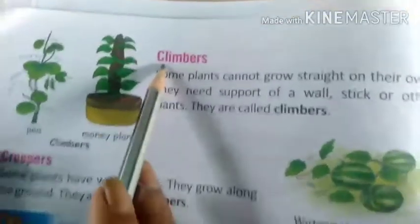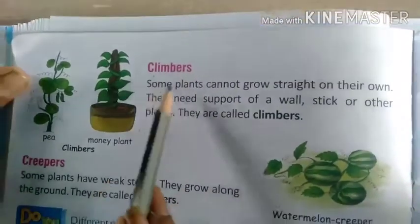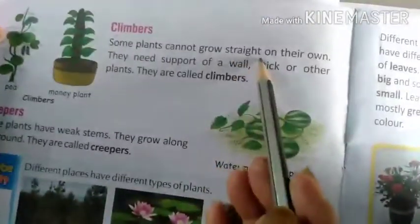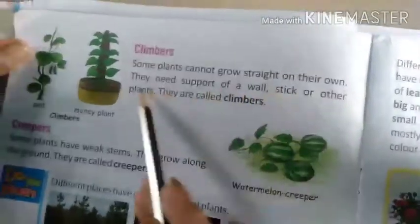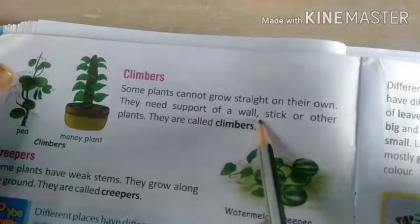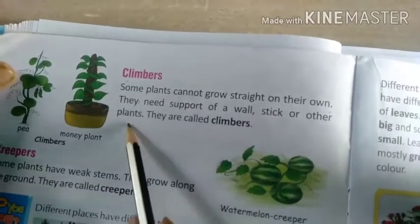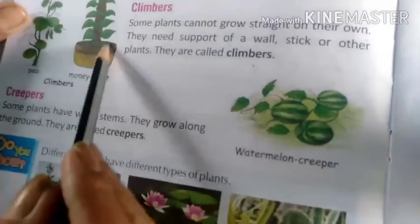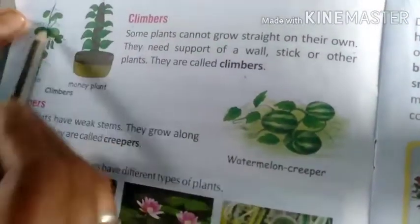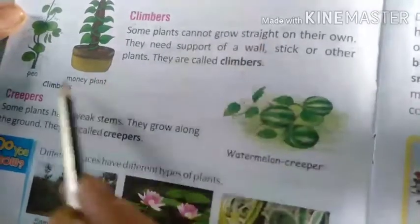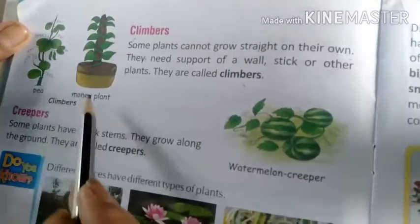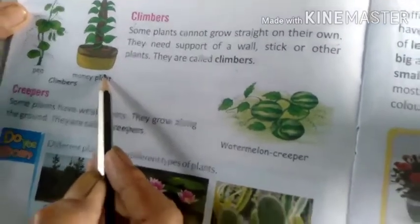Climbers. What are climbers? Some plants cannot grow straight on their own. They need the support of a wall, stick or other plants. They are called climbers — they are climbing on other plants. We have to give them support. Pea plant and money plant are also climbers.